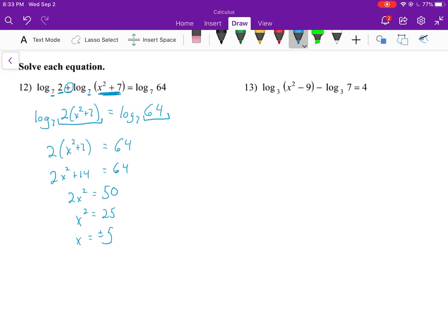We need to make sure we don't take the logarithm of a negative, so we check if positive and negative 5 work for x. They will because they're squared in both terms. So our answer is ±5.